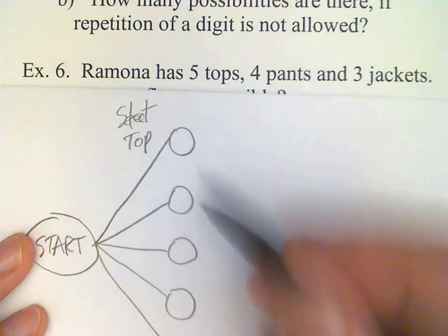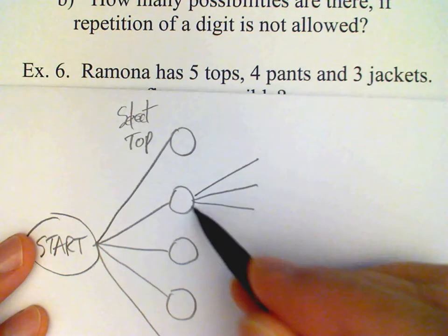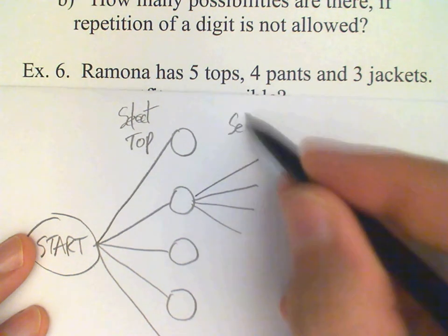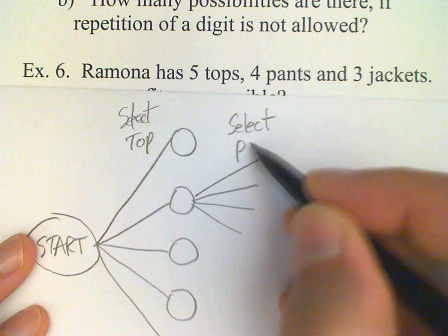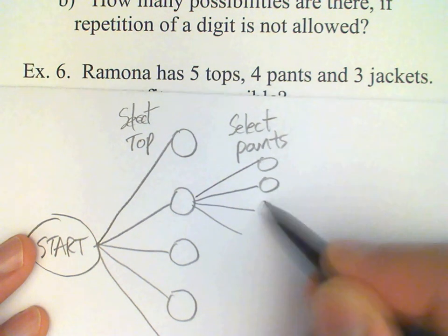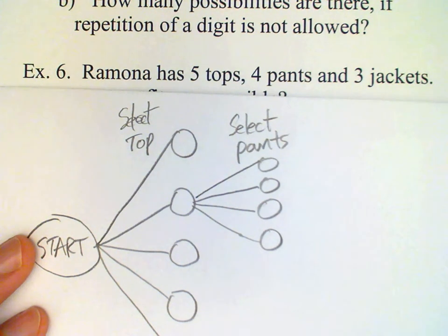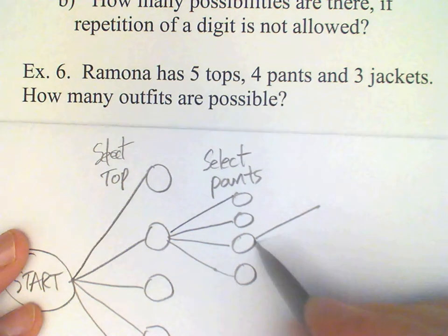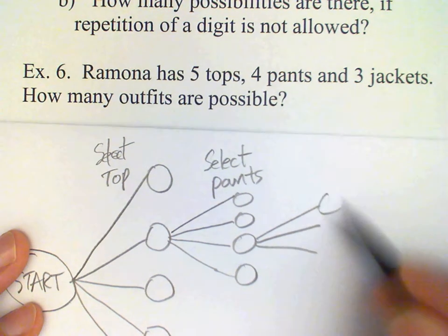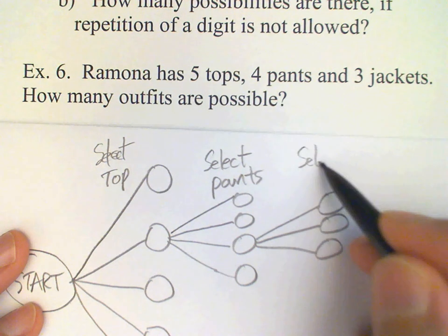So five possibilities for there, and then for each one of those, there's four possibilities for the pants. And then for each one of those, there's three possibilities for a jacket.